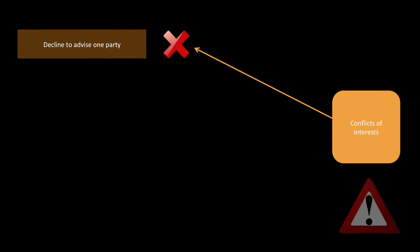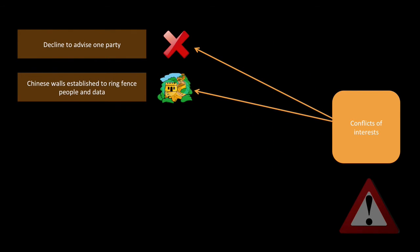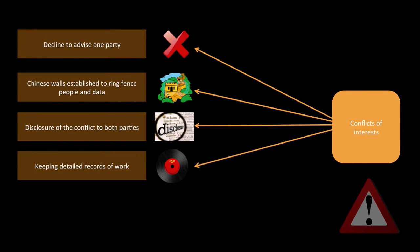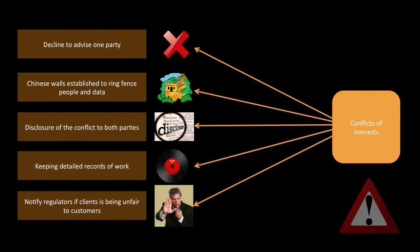Conflicts of interest — you're going to want to avoid these at all times. To avoid them, you can decline to advise one party. Or, if you're the only actuarial firm in town, you can establish a Chinese wall to ring-fence the staff and the information. At all times, you must always disclose what you're doing and record all the details. And if something is going unfair or someone is behaving improperly, you must whistleblow and notify the regulators.